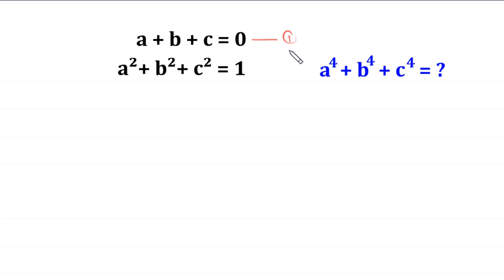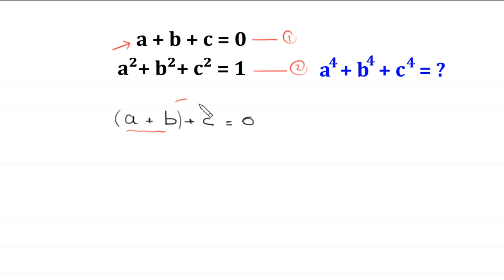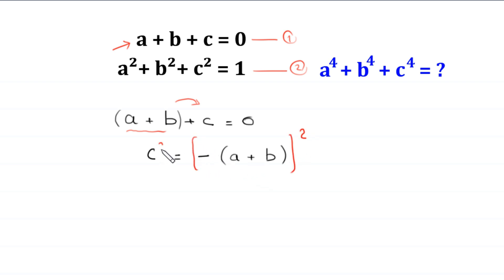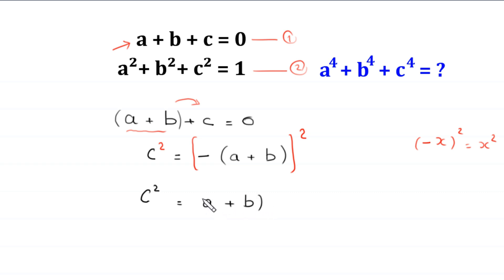Let us call the first equation equation 1 and the second equation 2. We take equation 1: a plus b plus c is equal to 0. We group a plus b and move it to the right hand side, so c is equal to negative of a plus b. Now we take a square of both sides. This will become c squared is equal to — since the square of any negative number is always positive — a plus b whole squared.